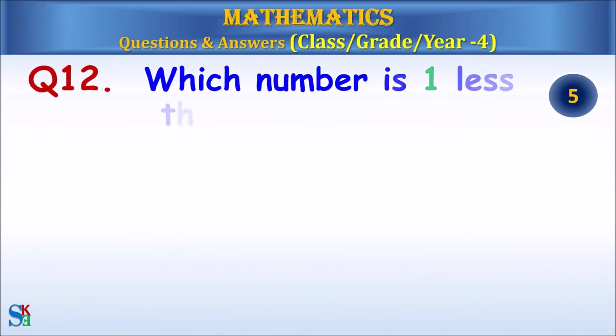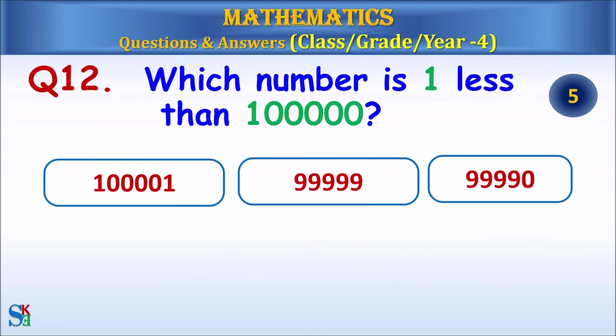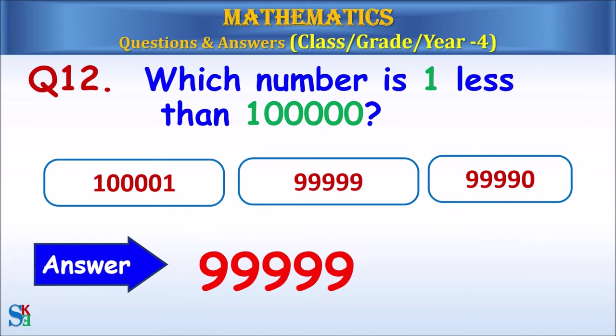Question 12: Which number is 1 less than 100,000? The answer is 99,999.